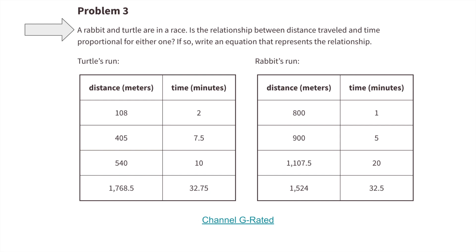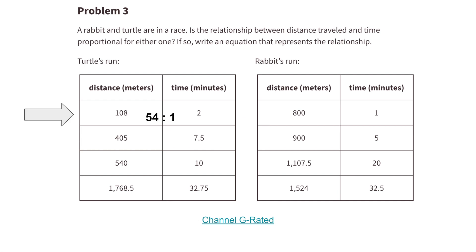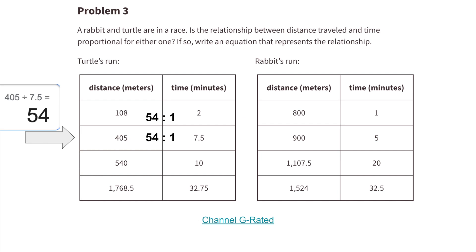Number 3. A rabbit and turtle are in a race. Is the relationship between distance traveled and time proportional for either one? For the turtle's run: 108 to 2 is a 54 to 1 ratio. 405 to 7.5 minutes — 405 divided by 7.5 equals 54, so also a 54 to 1 ratio. 540 to 10 gives 54 to 1. And 1,768.5 divided by 32.75 is also 54.